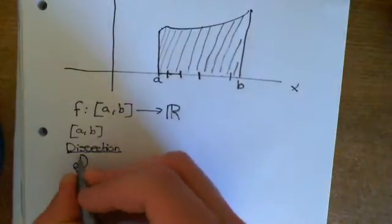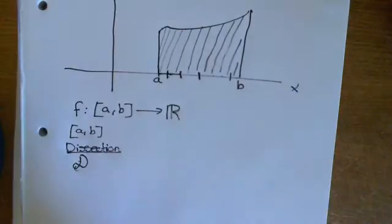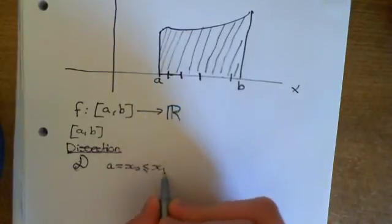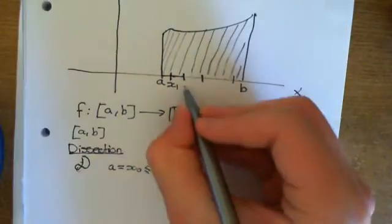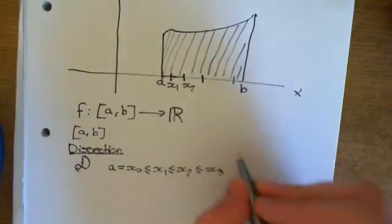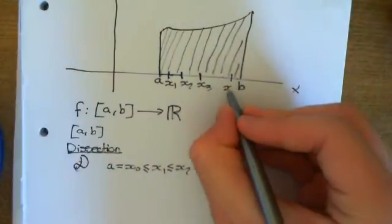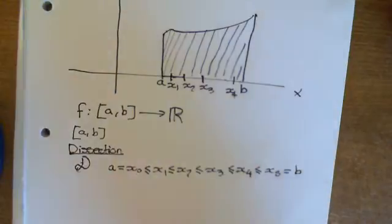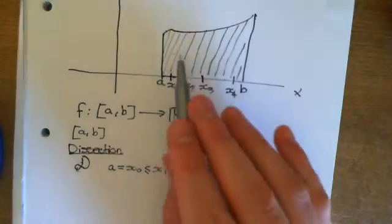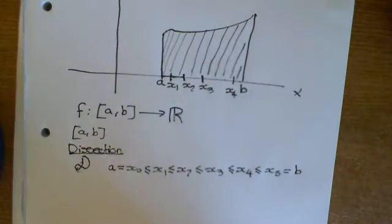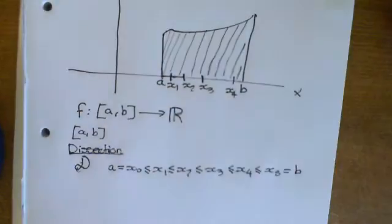We write a big curly D. A dissection is given by A as the first point, which we call X₀, and that's less than or equal to X₁, which is less than or equal to X₂, less than or equal to X₃, less than or equal to X₄, less than or equal to X₅, which equals B. So that's our dissection from X₀ to X₅. It splits this interval up into lots of smaller intervals. These intervals don't need to be the same size — you can take any dissection you want, with as many points as you like.